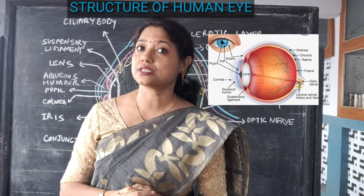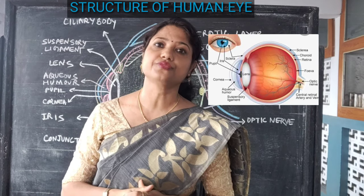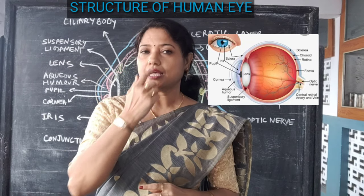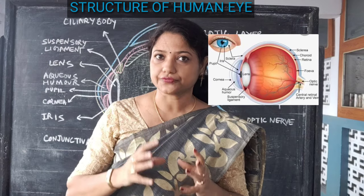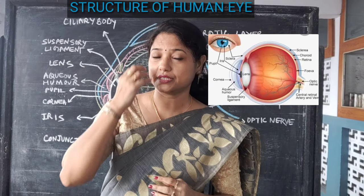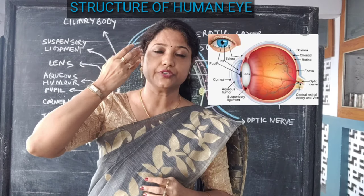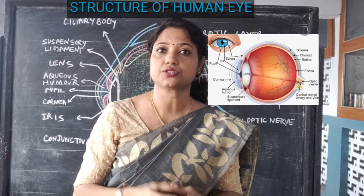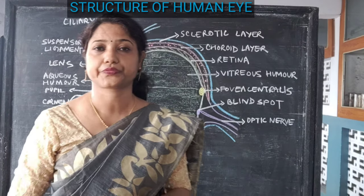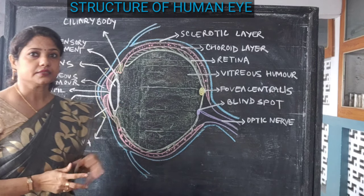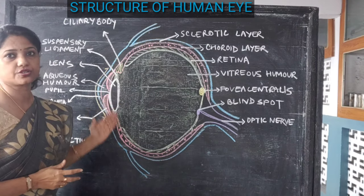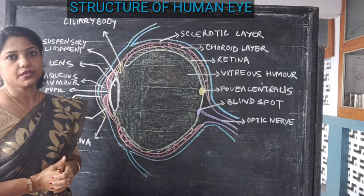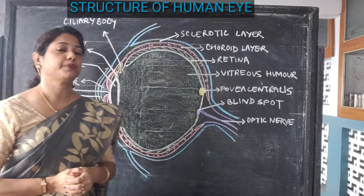Now we shall see the internal structure of our eyes. The eye is circular in structure. We call this whole eye to be an eyeball, and this is the structure of an eyeball.